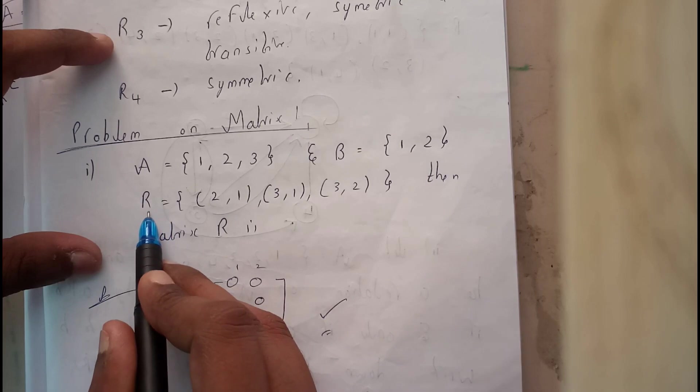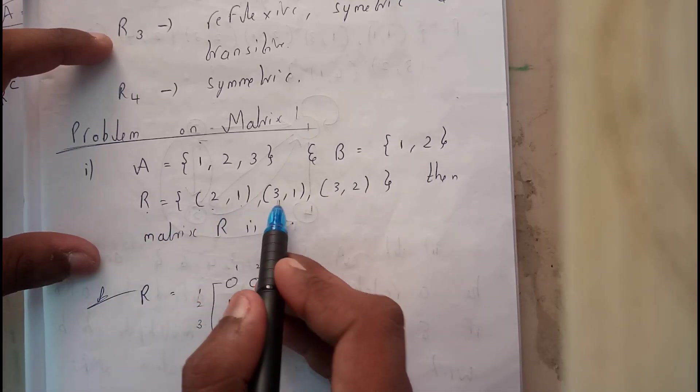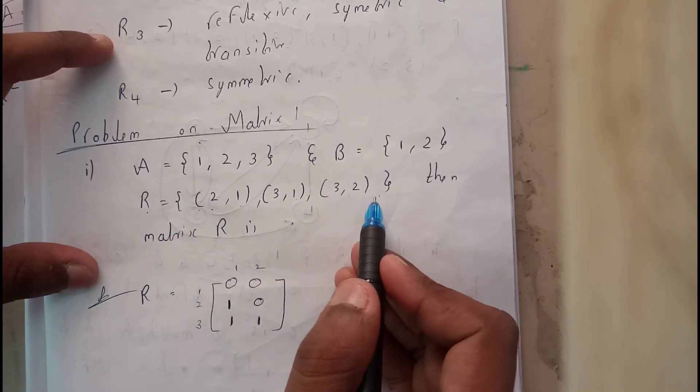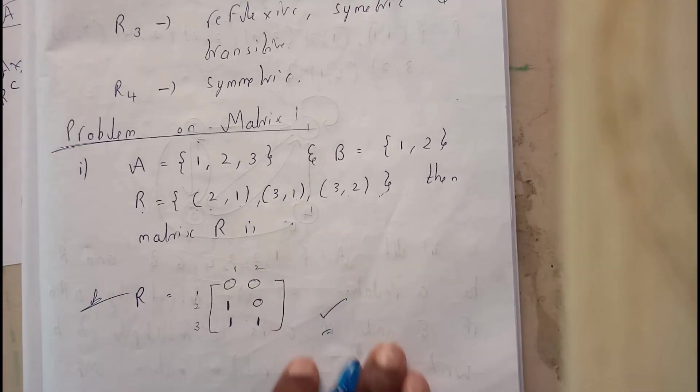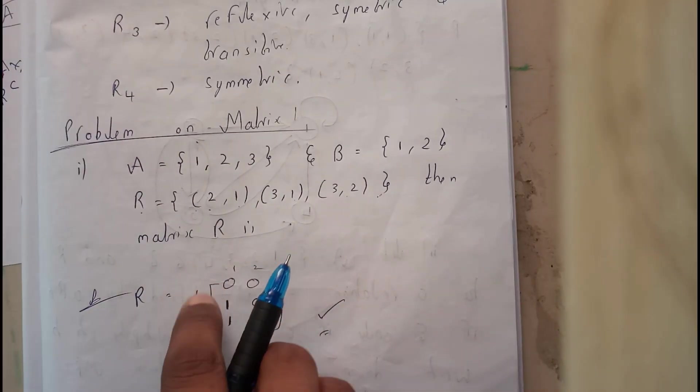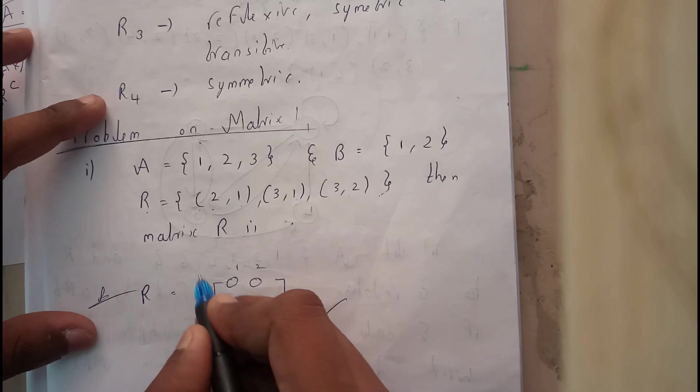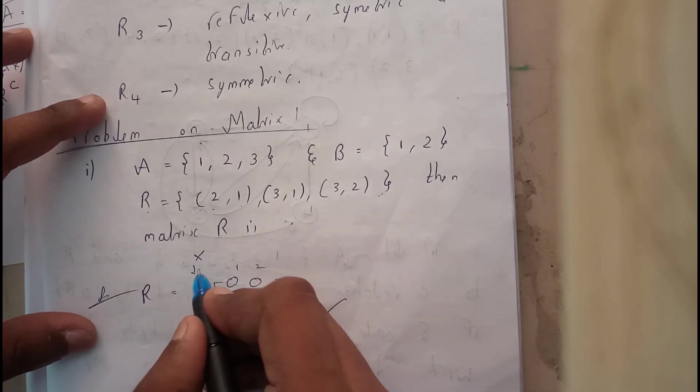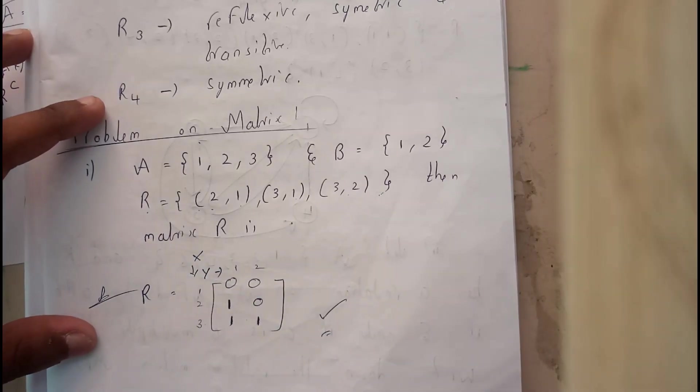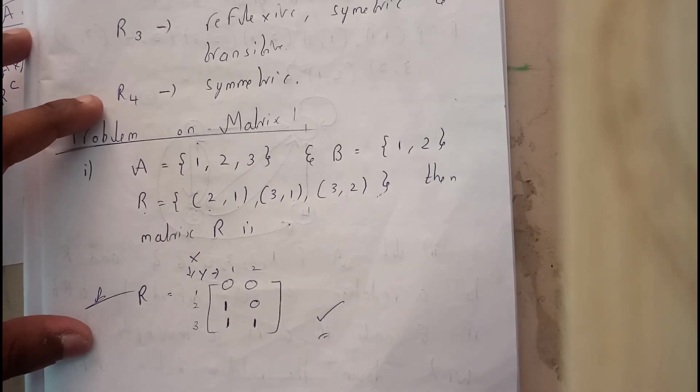Let's go through it. R equals {(2,1), (3,1), (3,2)}. You will be just doing a small thing such that let y axis be here and x axis here. This will be in terms of x and this will be in terms of y.